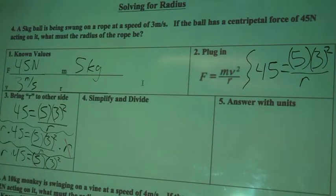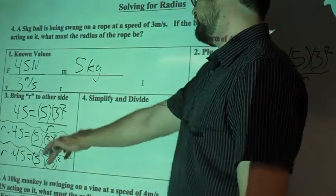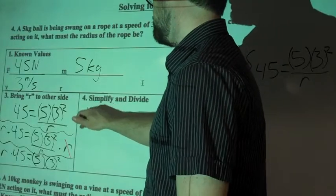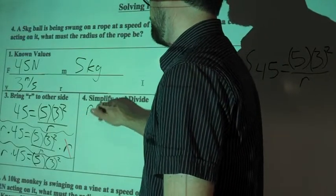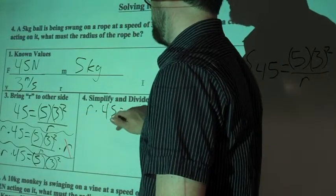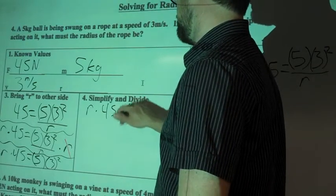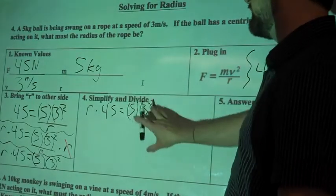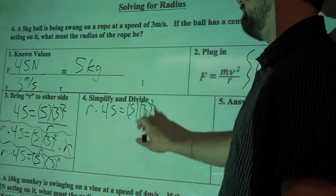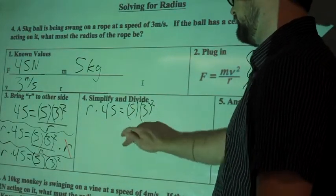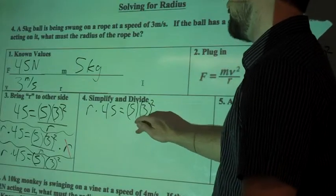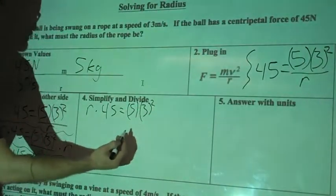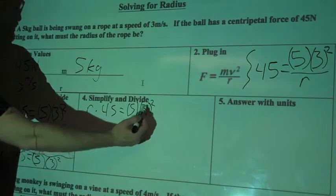So let's bring this up here, simplify and divide. So I've got R times 45 equals 5 times 3 squared. So first thing, I know I can take care of some math over here and simplify these problems. So let's do the exponent first, so if I'm solving for 3 squared...